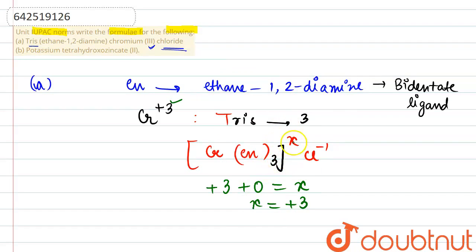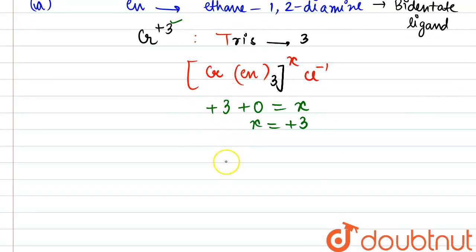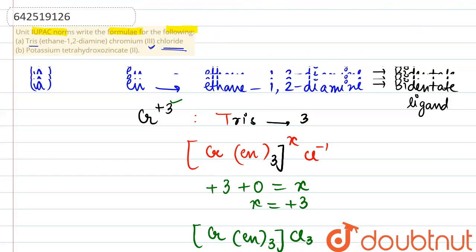So this whole sphere will be having plus 3 charge. So, to balance the positive charge, there would be 3 chloride that we would be requiring. So, the final formula of the compound will become Cr(EN)3Cl3.